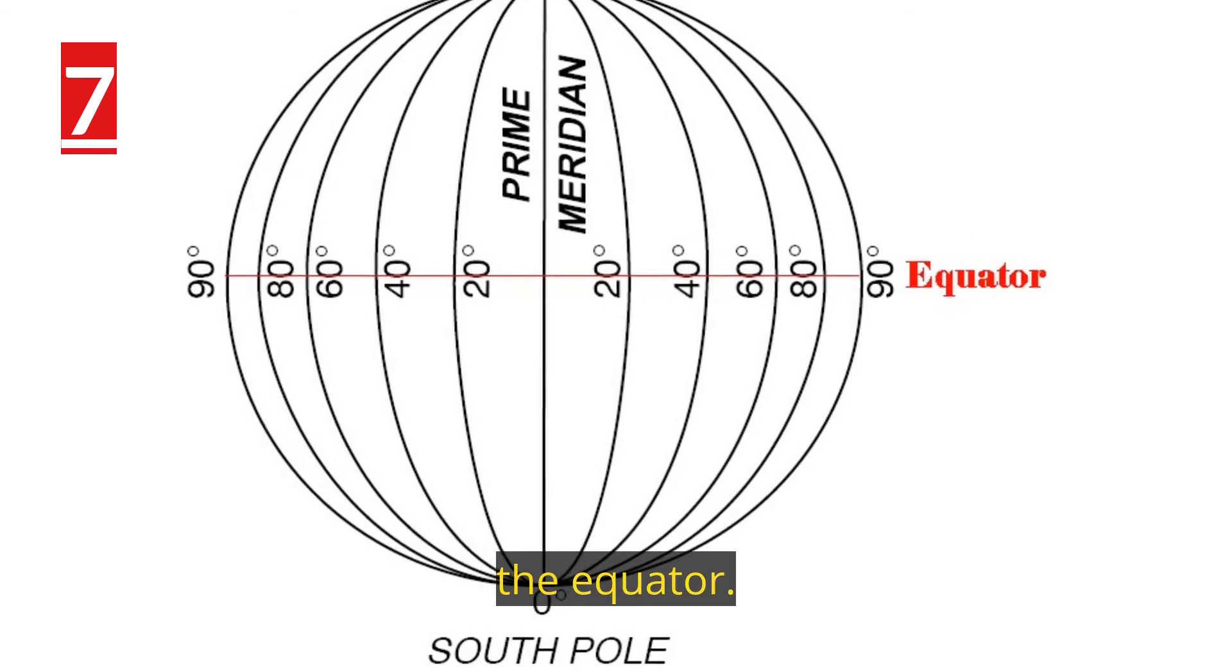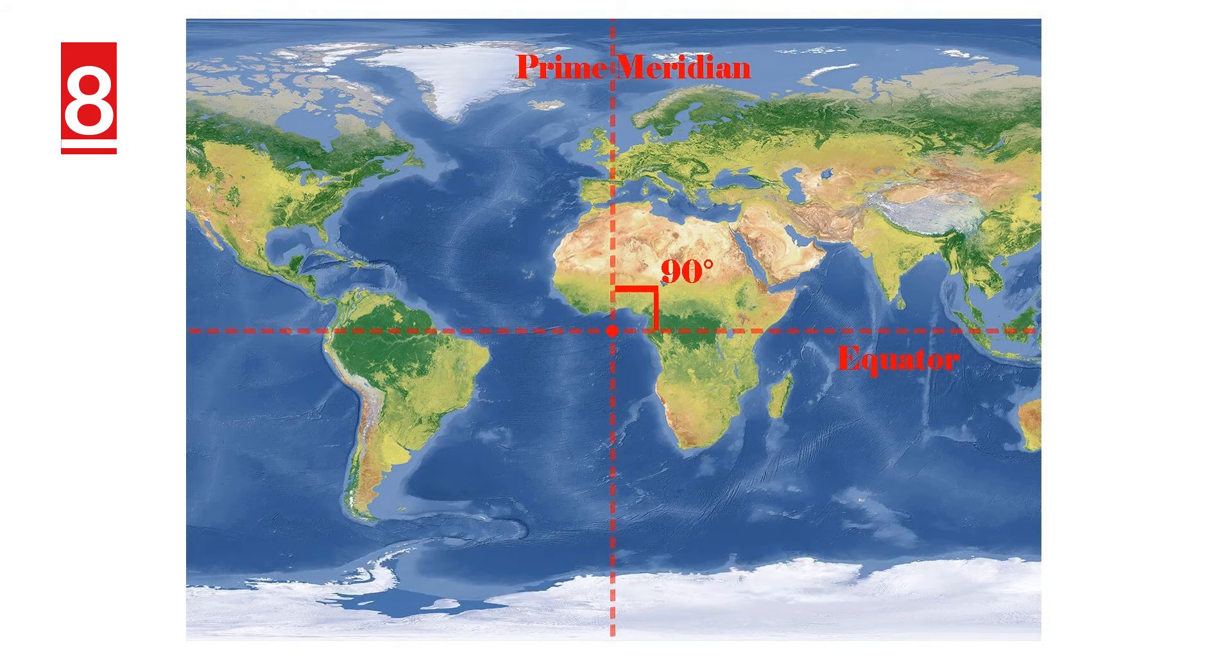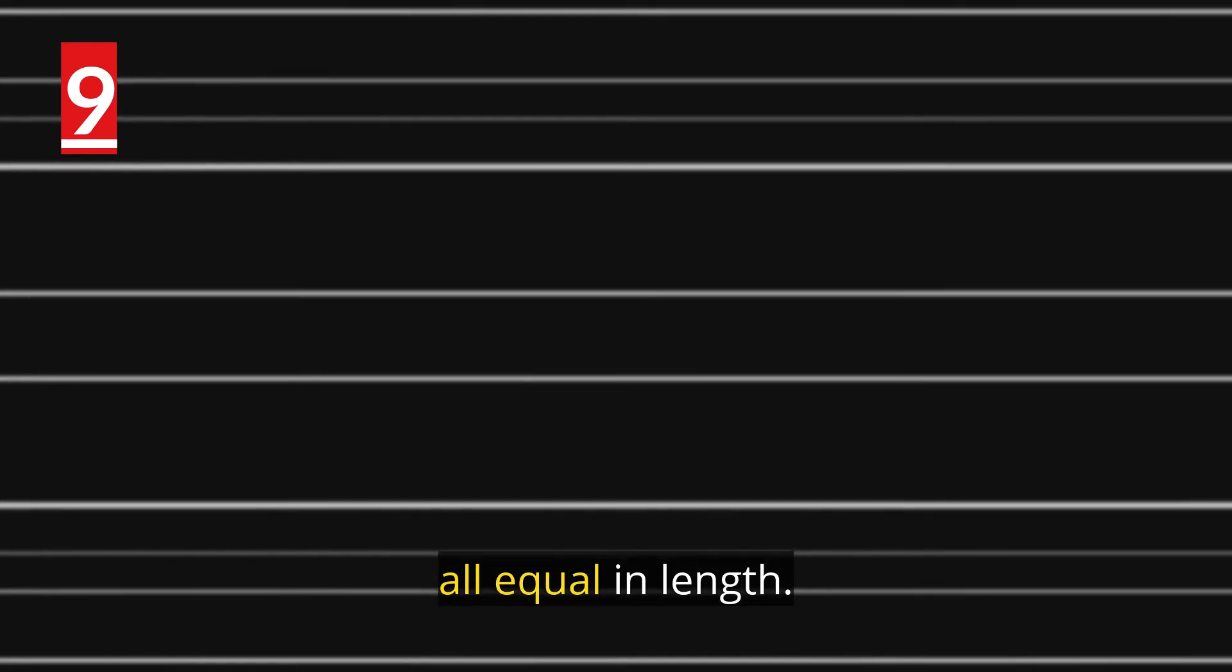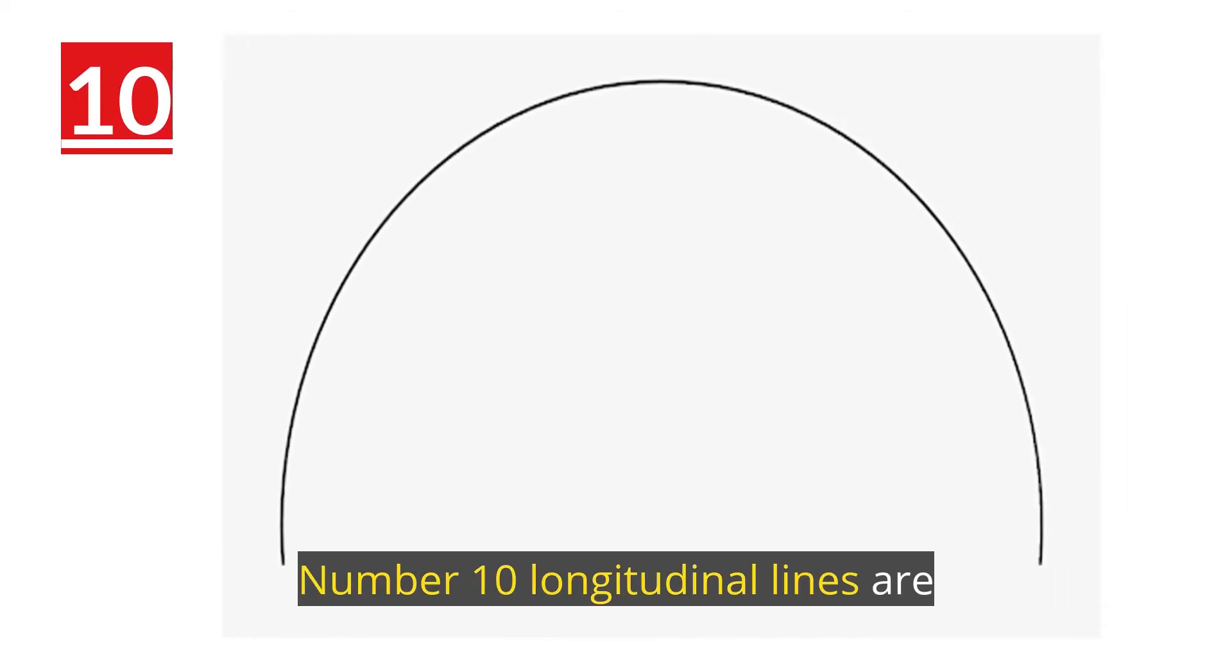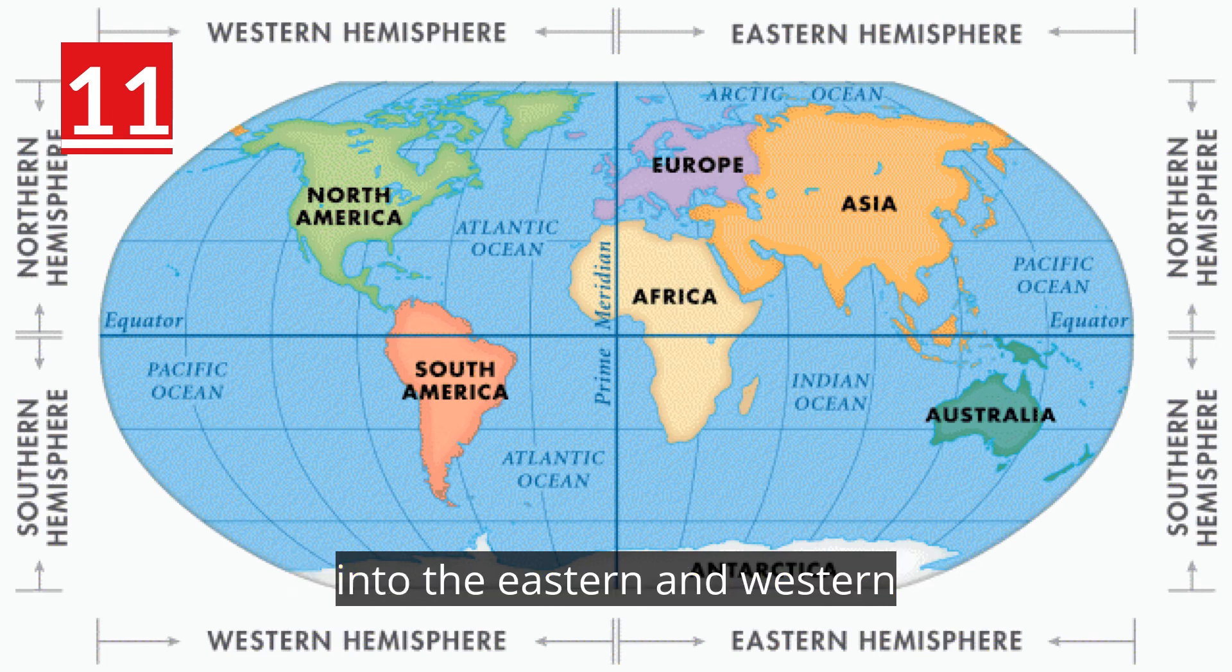Number eight: longitudinal lines intersect the equator at a right angle. Number nine: longitudinal lines are all equal in length. Number ten: longitudinal lines are exactly half of a circle. Number eleven: longitude splits the globe around the Prime Meridian into the eastern and western hemispheres.